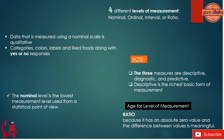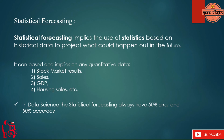An important tip for this video: statistical forecasting implies the use of statistics based on historical data to project what could happen in the future. It can be applied to any quantitative data — stock market results, sales, GDP, etc. In data science, statistical forecasting always has around 50% accuracy by correct predictions. We can use it through graph representation of mean, median and mode data. At the end of these classes, we will discuss about statistical forecasting.